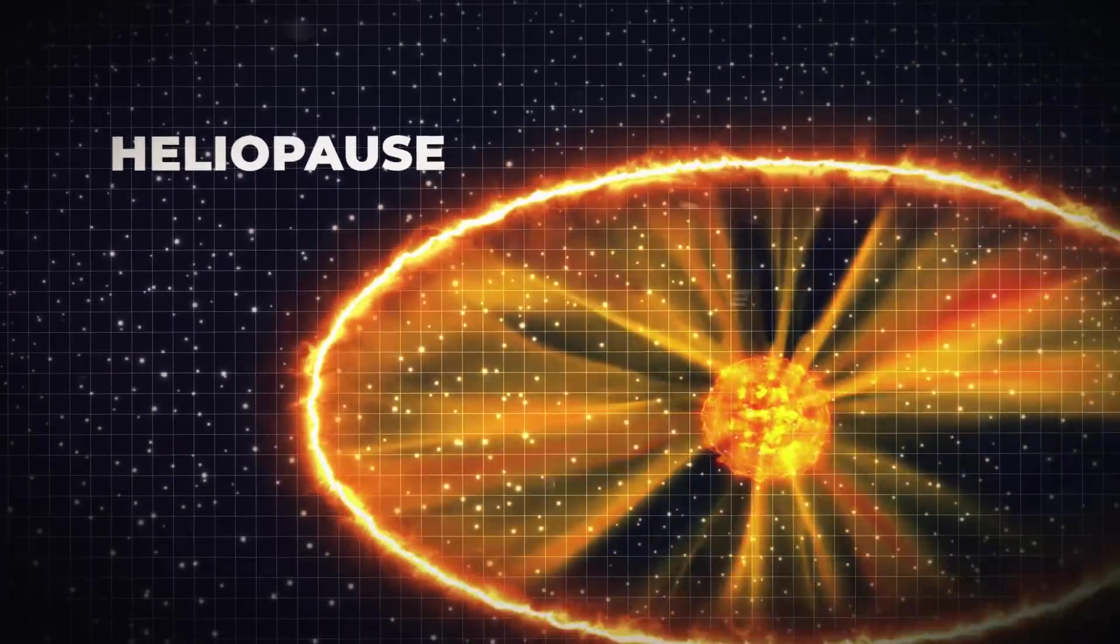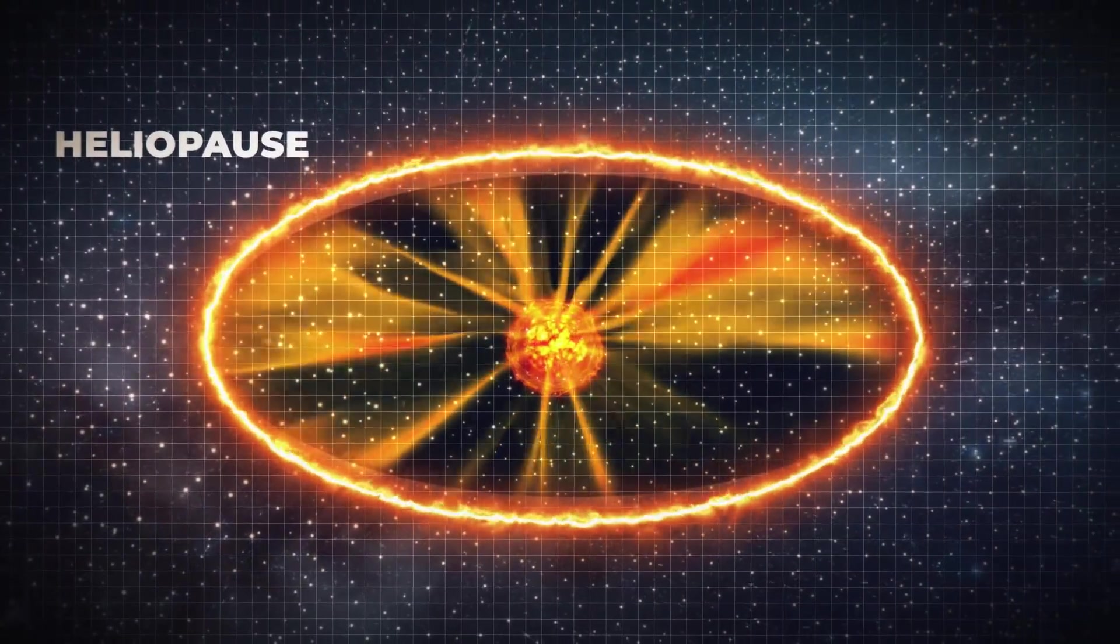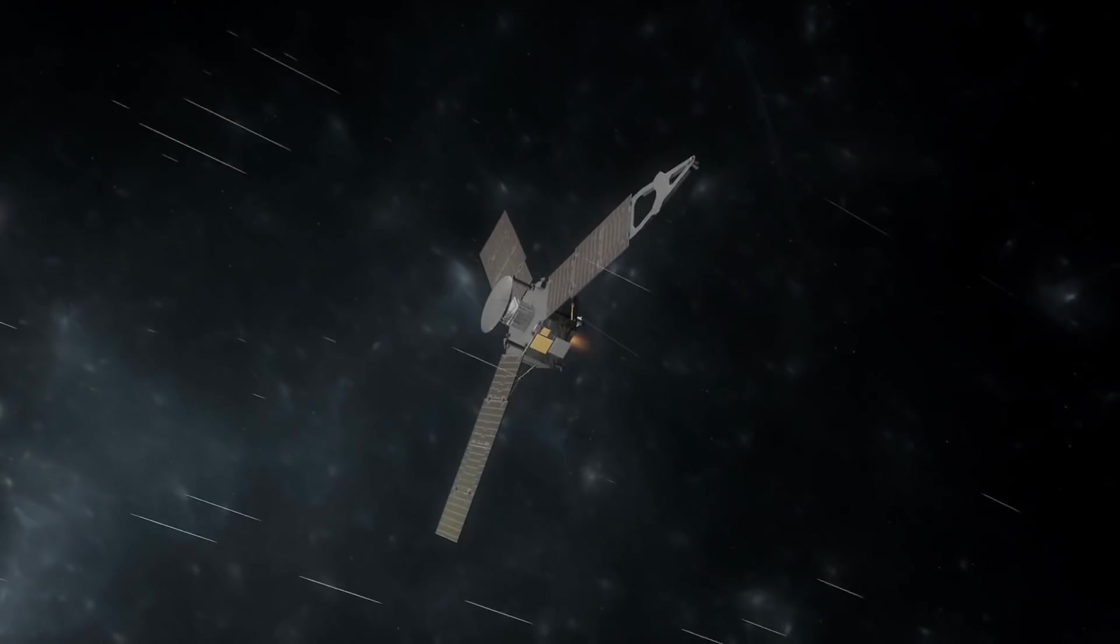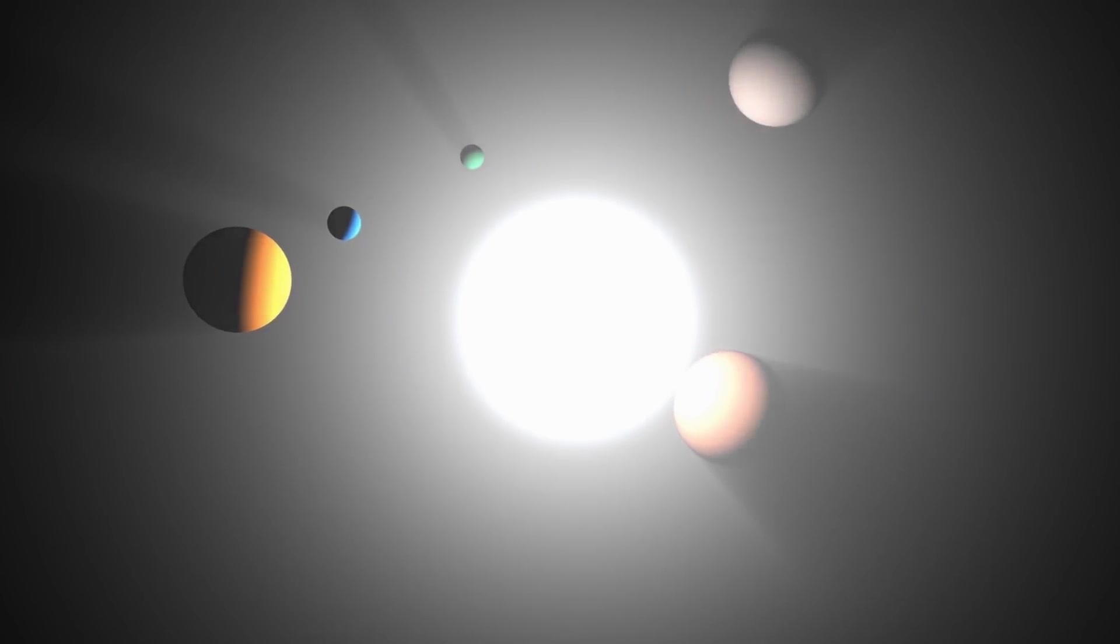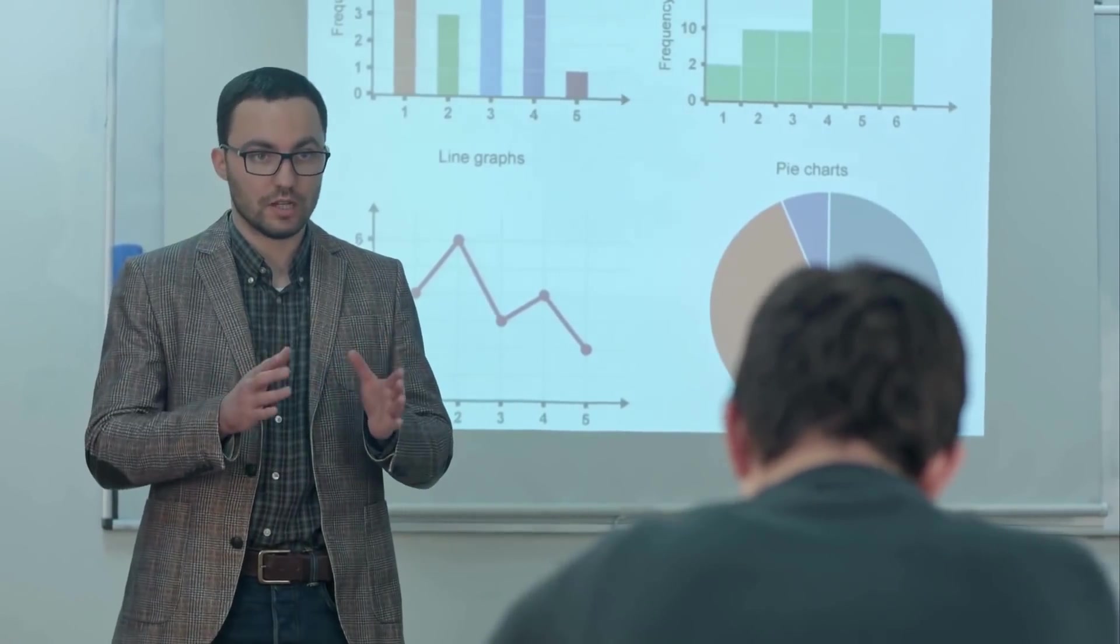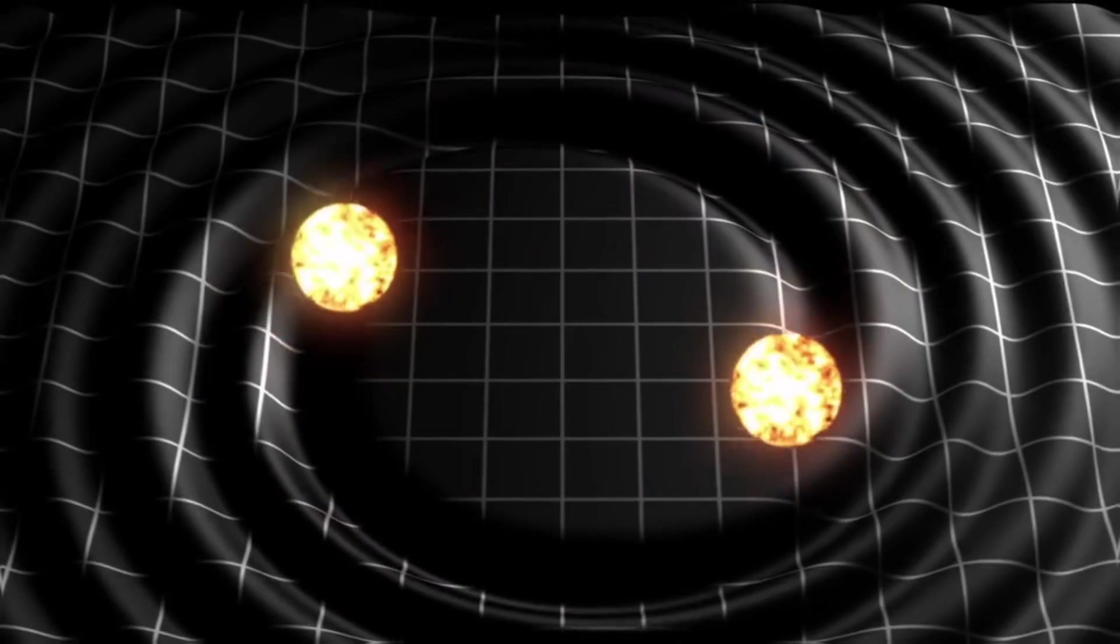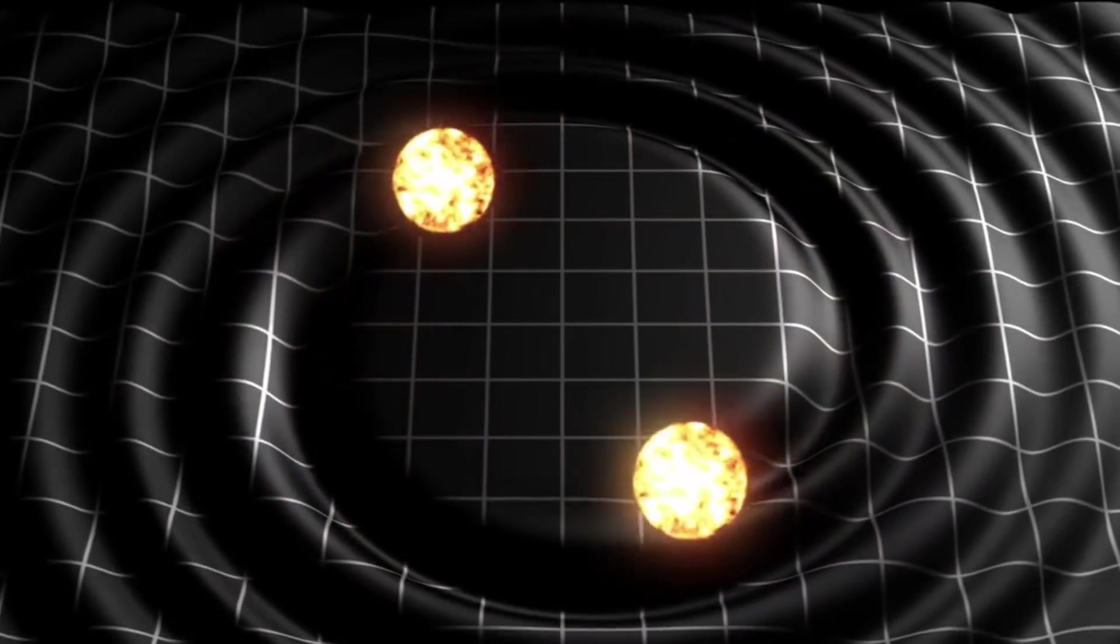The heliopause, the heliosphere's farthest edge, marks the entrance to interstellar space. Understanding this threshold has ramifications on our understanding of the Sun's trip through the galaxy, which may lead to new insights about the condition of other stars spread around the universe.